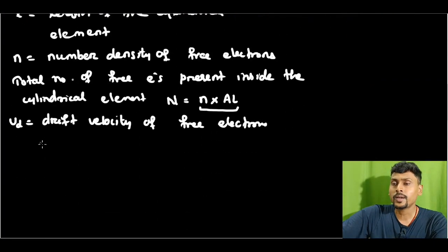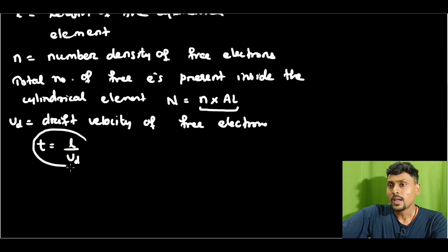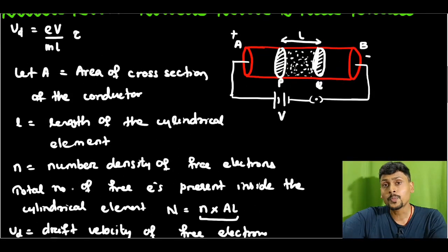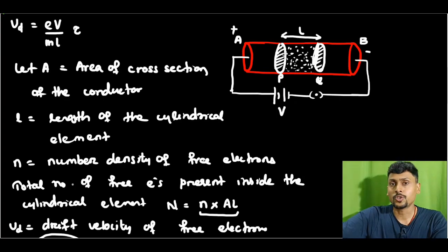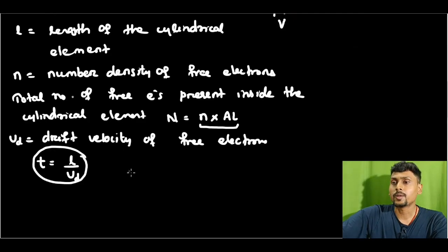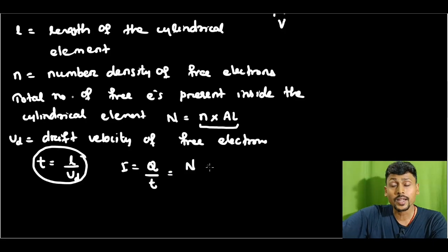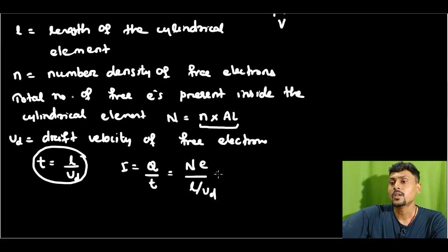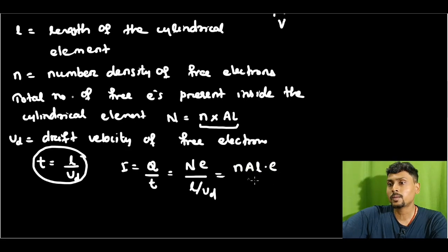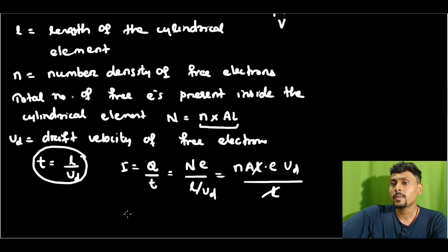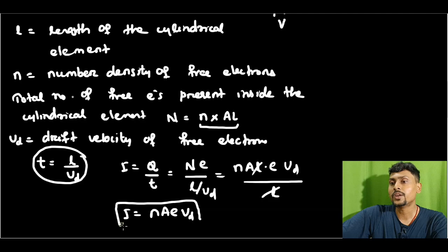Going back to the current formula — current equals charge divided by time. Charge is the number of free electrons times the charge of one electron, which is n·A·L·e, divided by the time L divided by Vd. So current I equals n·A·L·e multiplied by Vd divided by L. The L cancels, giving us: current I equals n·A·e·Vd. This is the relation between electric current and drift velocity.